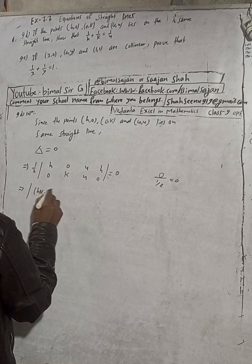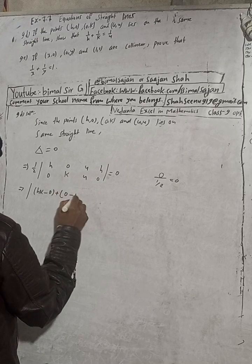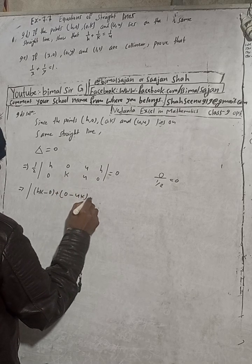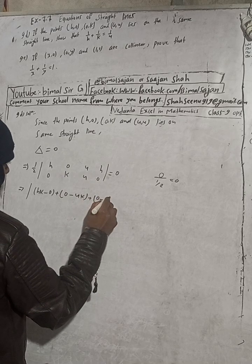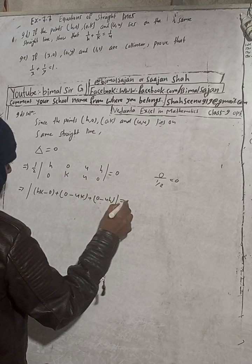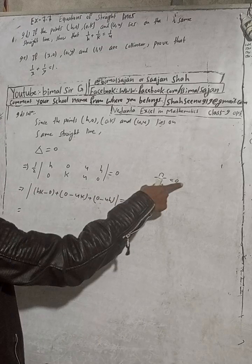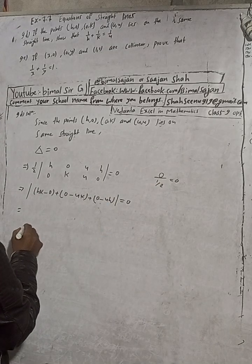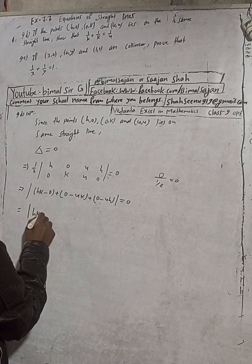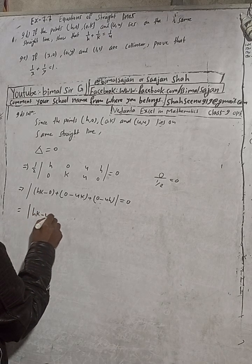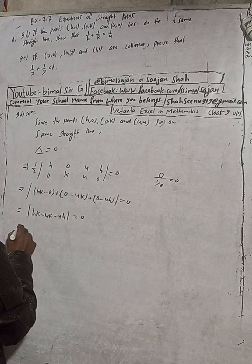Expanding: h into k minus zero, plus zero into four minus four k, plus one into zero minus four k. After simplification, we get h times k minus four k minus four h equals zero.